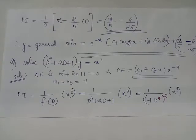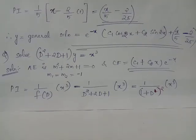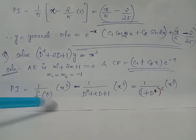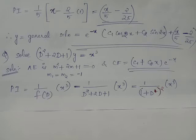Let us evaluate the particular integral for this differential equation: PI equals 1 by f(D) acting on RHS x³, where f(D) equals D² + 2D + 1. We can also write f(D) as (1 + D) the whole square.